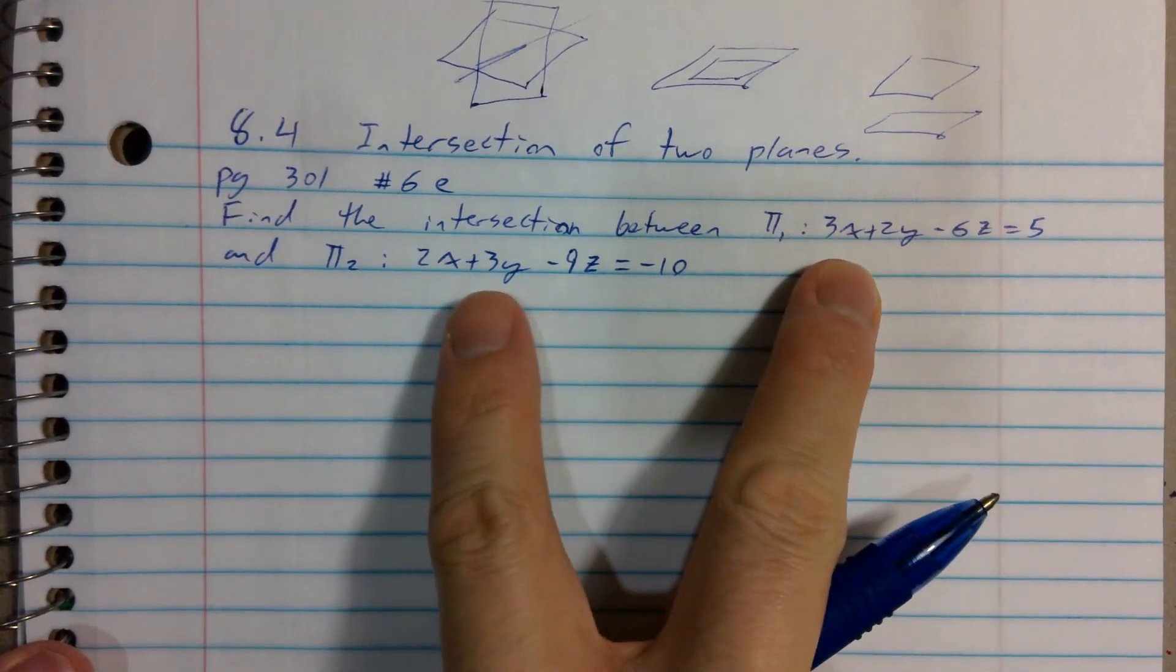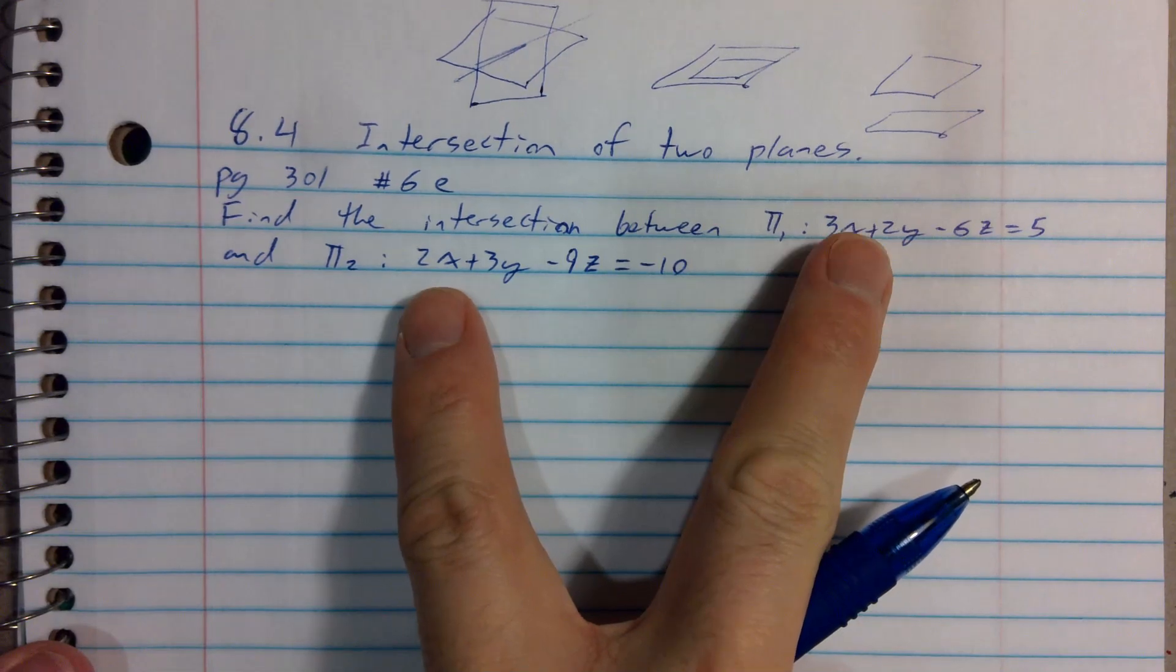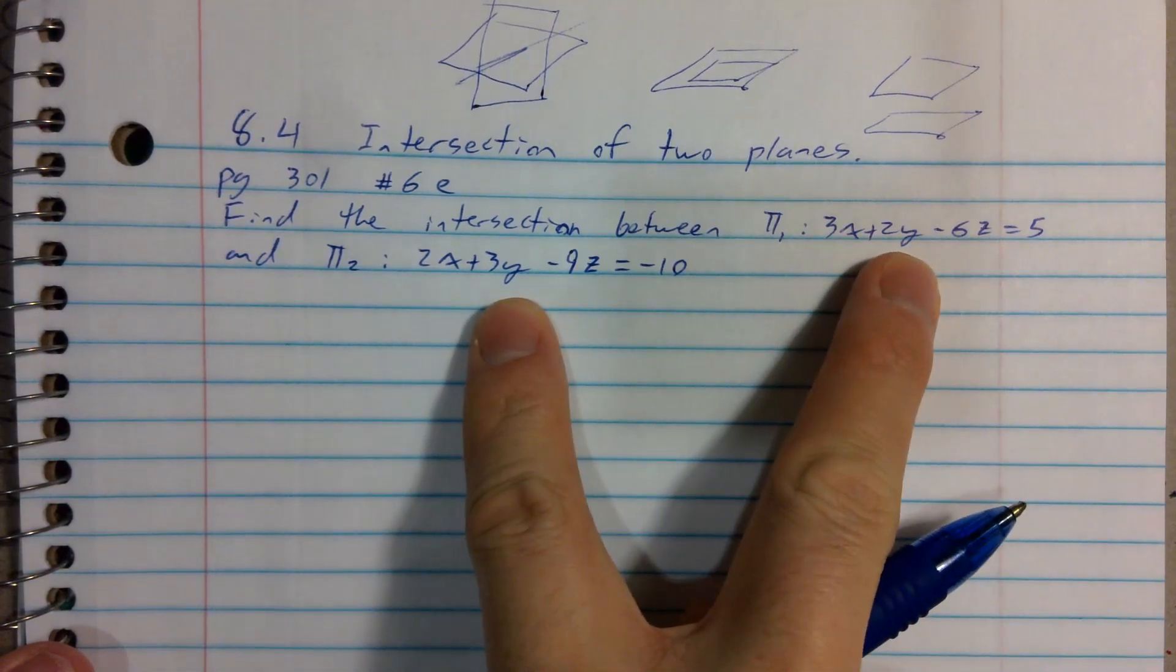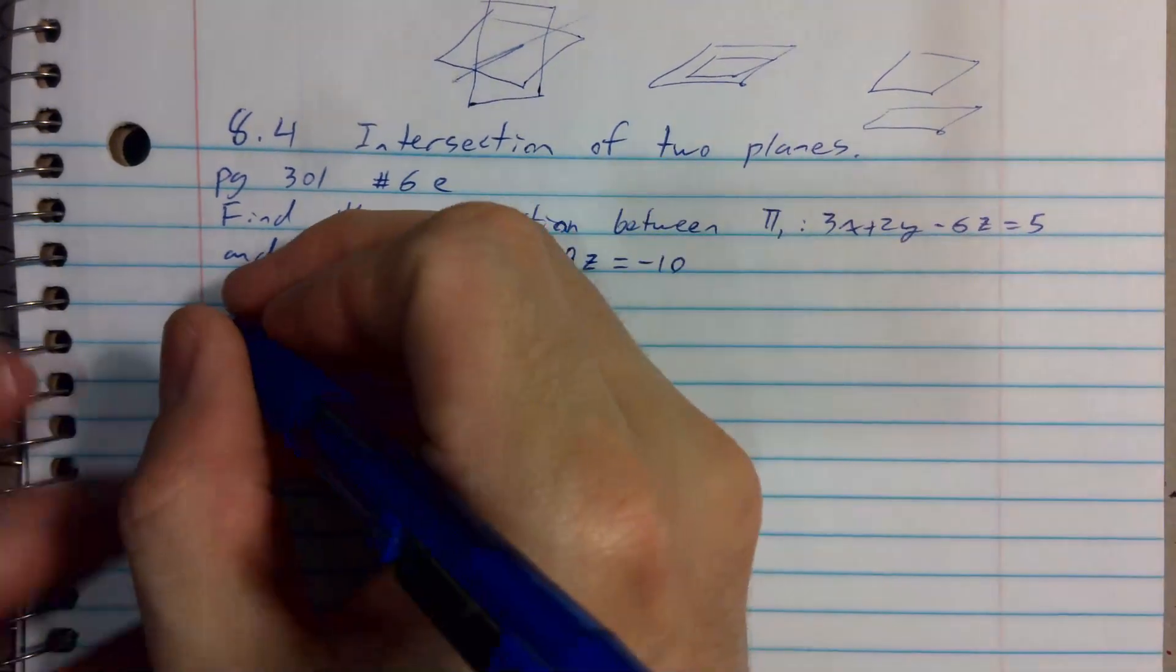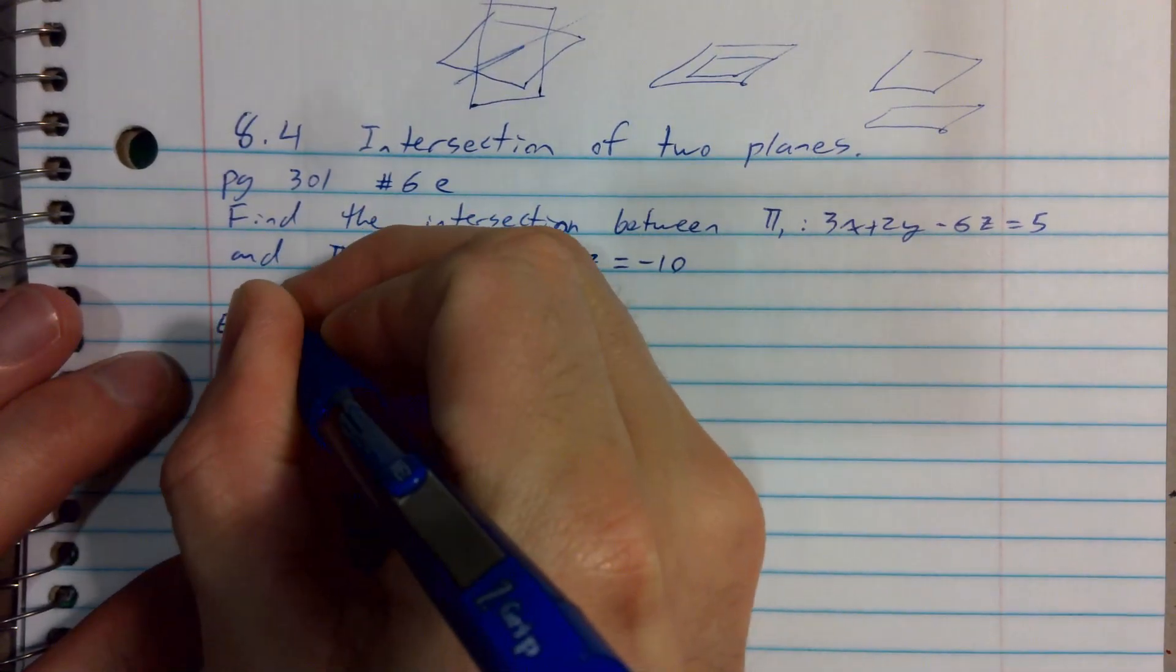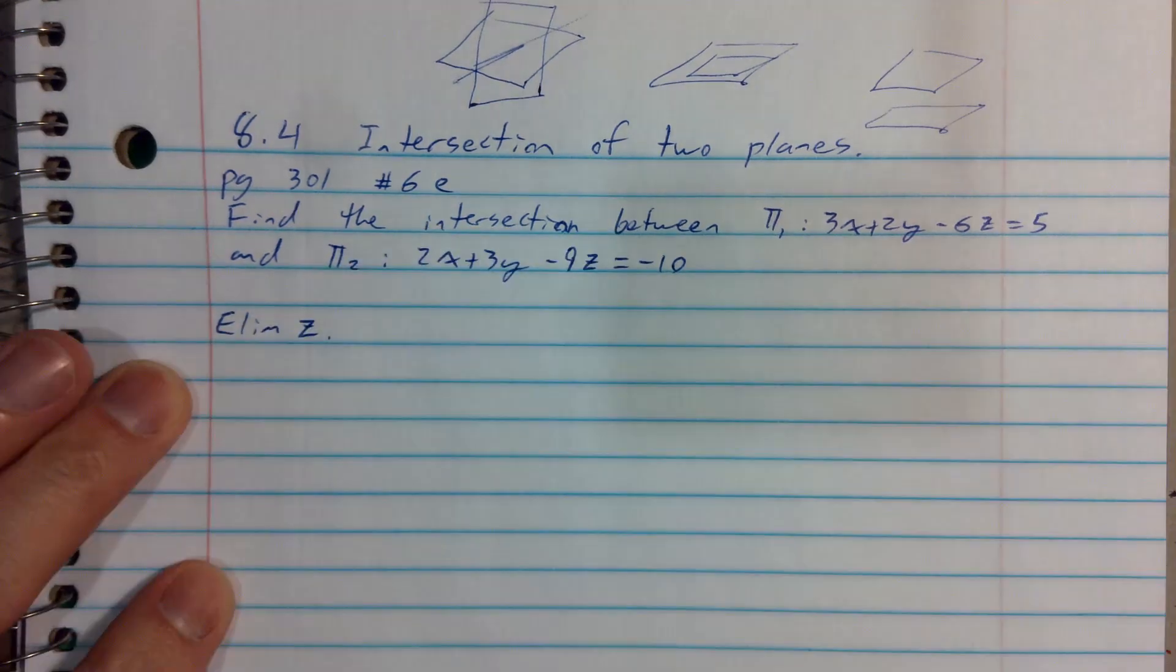You could say, wouldn't it be easier to eliminate x's? I would still have to multiply both equations. To eliminate y's, I would have to multiply both equations. So I'm just going to eliminate zeds. I'm going to tell my reader I am eliminating zeds and tell myself to keep track of my goal.